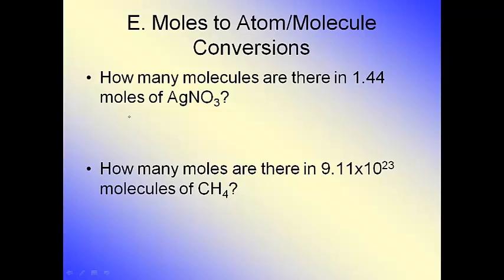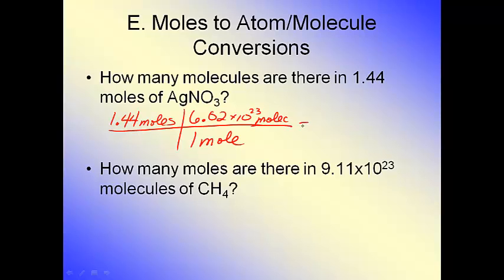So now I'm going to convert from moles to molecules of silver nitrate. Again, write down your given first. First thing you do is write down your given. I know that one mole of any substance is equal to 6.02 times 10 to the 23rd molecules of silver nitrate.